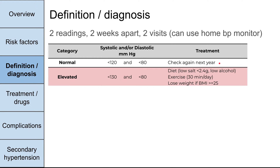Elevated blood pressure, previously called pre-hypertension, is defined as a systolic blood pressure between 120 and 130, with the same diastolic criteria. The recommendations for somebody with elevated blood pressure are a low-salt diet — ideally less than 2.4 grams of salt, which is pretty hard to achieve — and to cut out or minimize alcohol. Additional suggestions are exercise 30 minutes a day and to lose weight if your BMI is above 25.